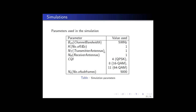The number of UEs was restricted to 1 and we assumed a SISO antenna technique with one transmitter and one receiver antenna. The channel quality indicator was fixed to 4, 8 and 11.